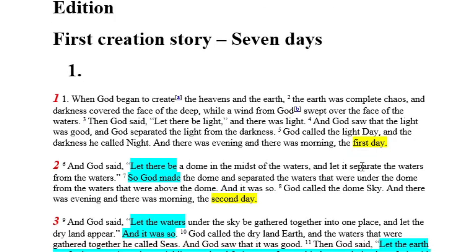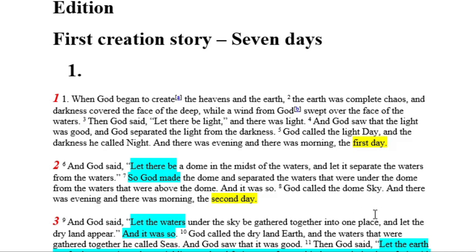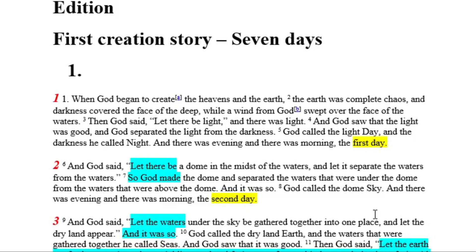I've done some light coding, and there are things called if-then statements: if this happens, then that. You would probably have that on space launches — if this fails, then shut down; if that fails, then shut down. Those are always part of electronics and life. It's a cause and effect. If it rains, you get wet. If this, then that. You see that is always going to be there.